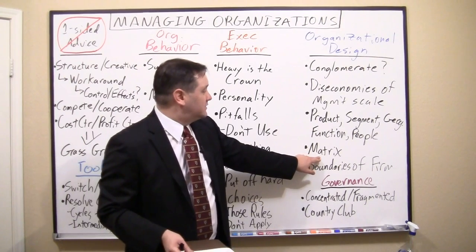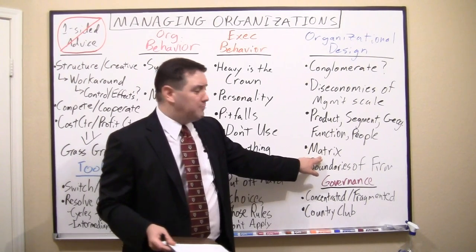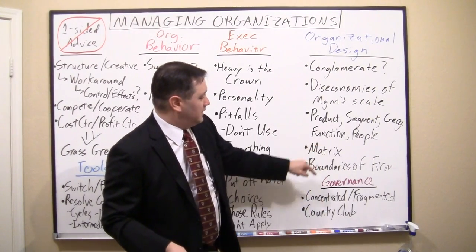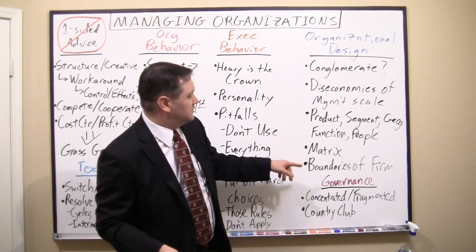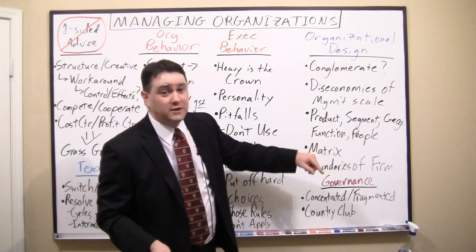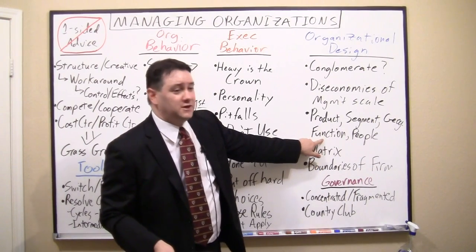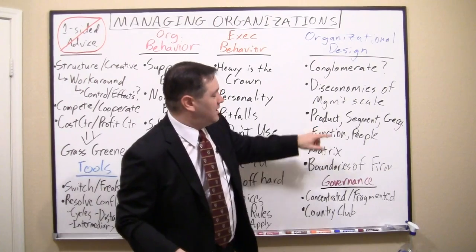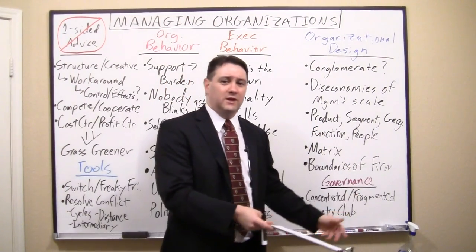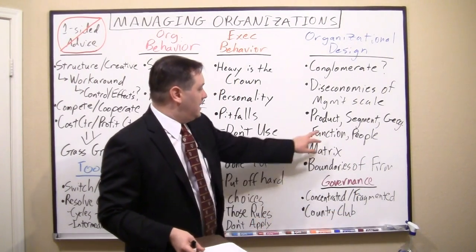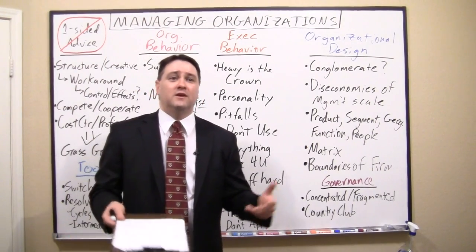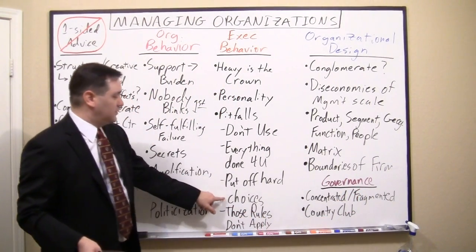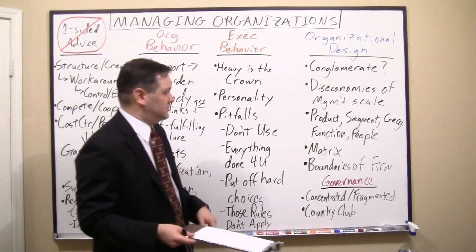There is an attempt to have it both ways: the classic matrix organization, where you report to multiple bosses. For example, a tire engineer at General Motors might report to both an engineering function boss who oversees tires across all of GM, and a product boss for the pickup truck program. This can reflect the best of both worlds, but you could also argue it's just putting off hard choices.